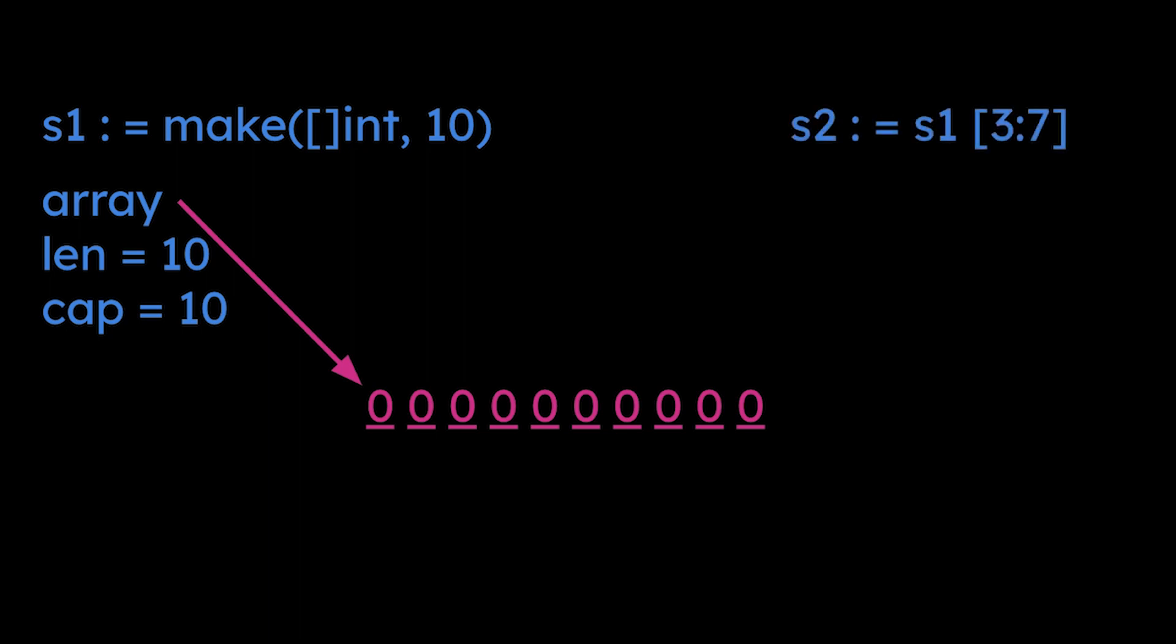Then I'm going to create a second slice here at S2, which is a sub-slice of S1. We're taking S1 from the third index all the way up to, but not including, the seventh index.